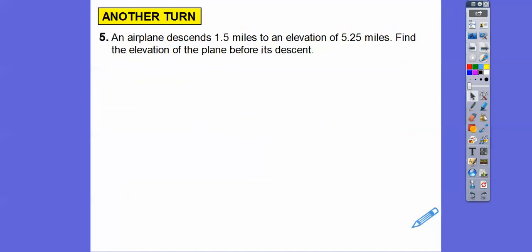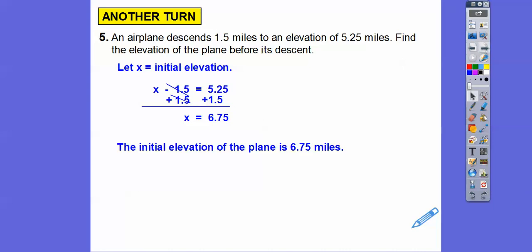Okay. So an airplane descends 1.5 miles to an, descends means going down, 1.5 miles to an elevation of 5.25 miles. Find the elevation of the plane before it descends. So we'll let x be the initial elevation, so it descends, so we're going to subtract 1.5 from x, and it's going to get us to 5.25. So we'll go ahead and add 1.5 to both sides. I should have added a zero right there, but that's okay. So five plus zero or nothing is five, and then this is going to be seven, bring the decimal down, and six, so 6.75, and then answer the question. So the initial elevation of the plane was 6.75 meters.